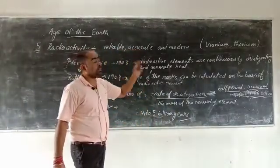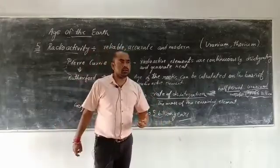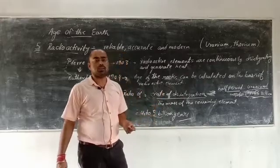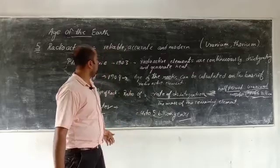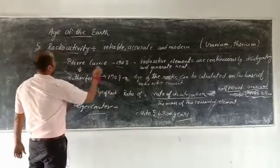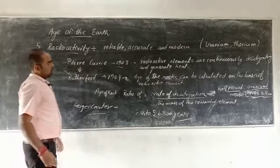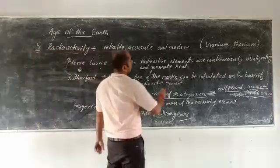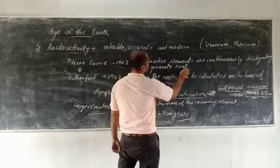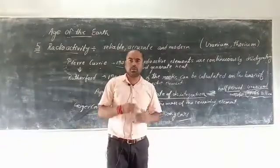Two examples of radioactive elements are uranium and thorium. Let's find out the history. During 1903, Madam Pierre Curie said that radioactive elements are continuously disintegrating and generate heat.